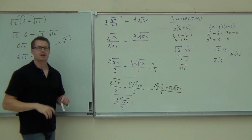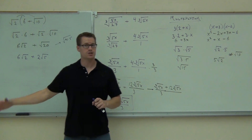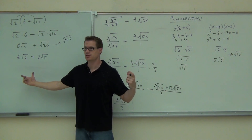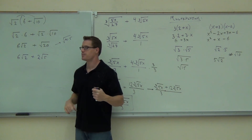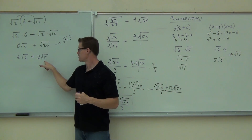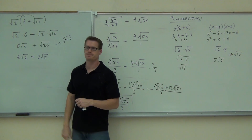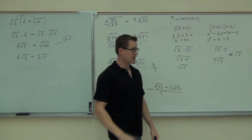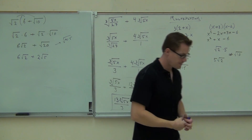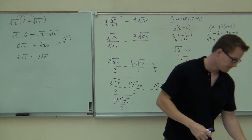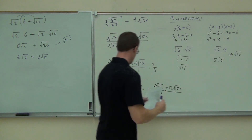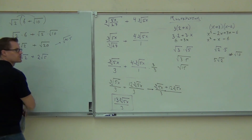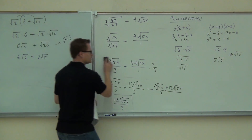So out of here you get 6 square root 2 plus 2 square root 5. The last thing you check for is if you can actually combine those — that's what we just covered with addition. Can you combine them? No — the radicands are 2 and 5, different. That's as far as you can go, so that's your expression. Let's do a couple more — I'll give you maybe 2 to do on your own.